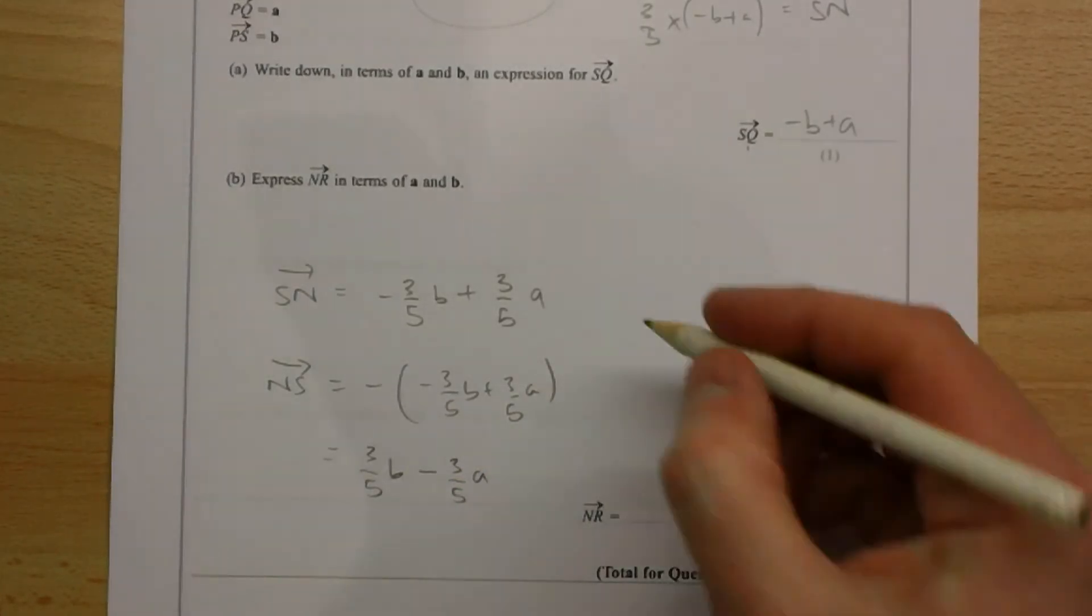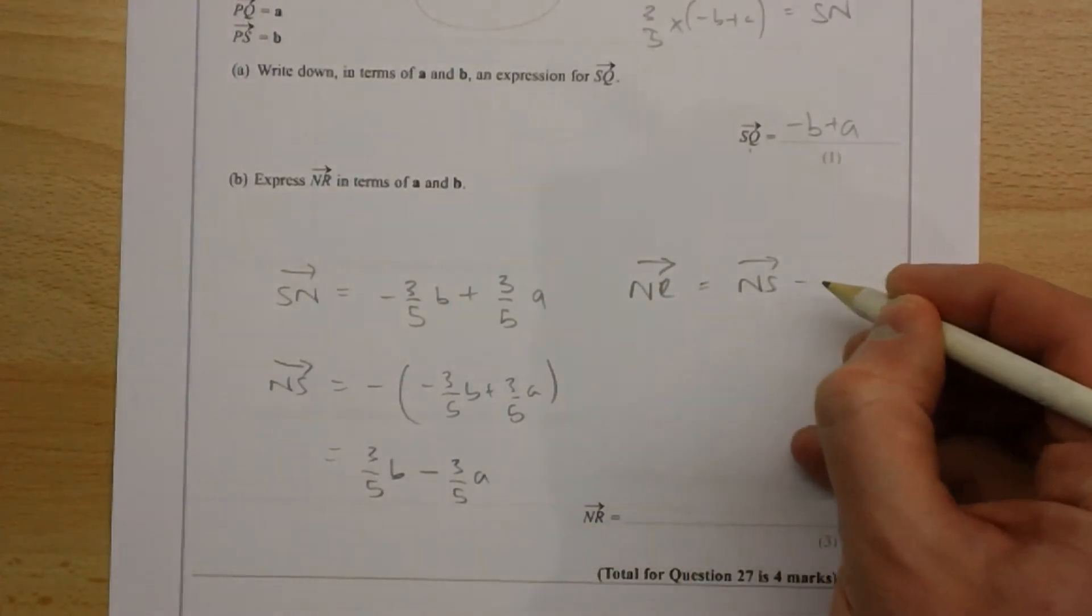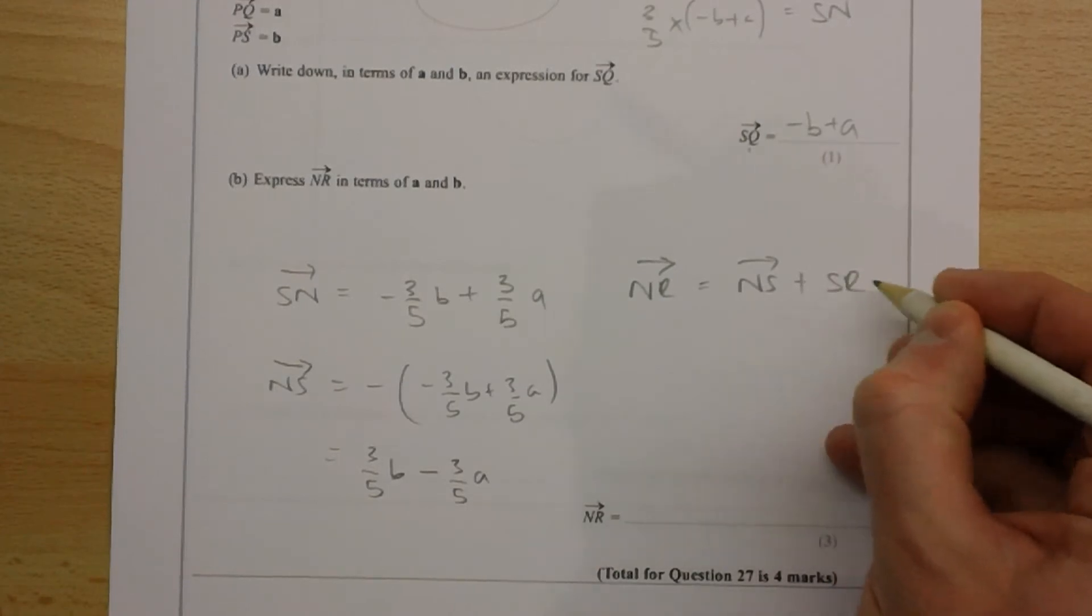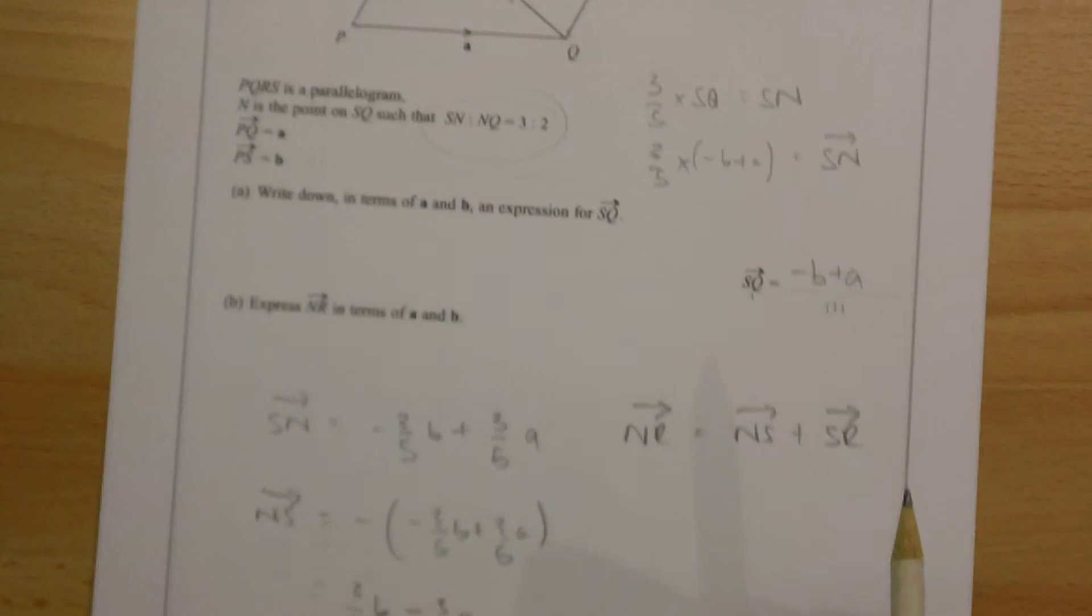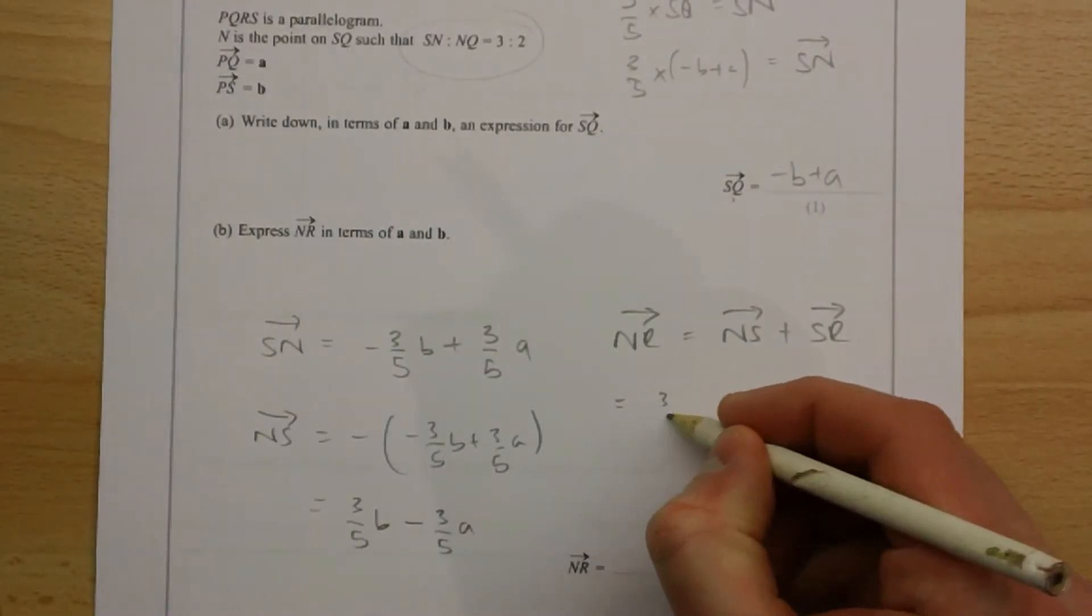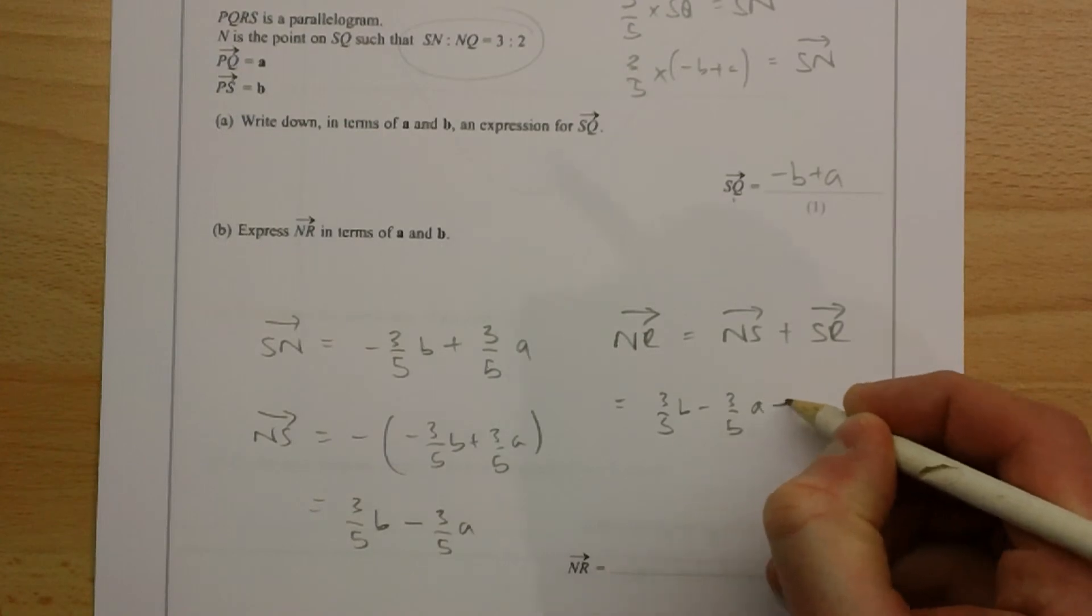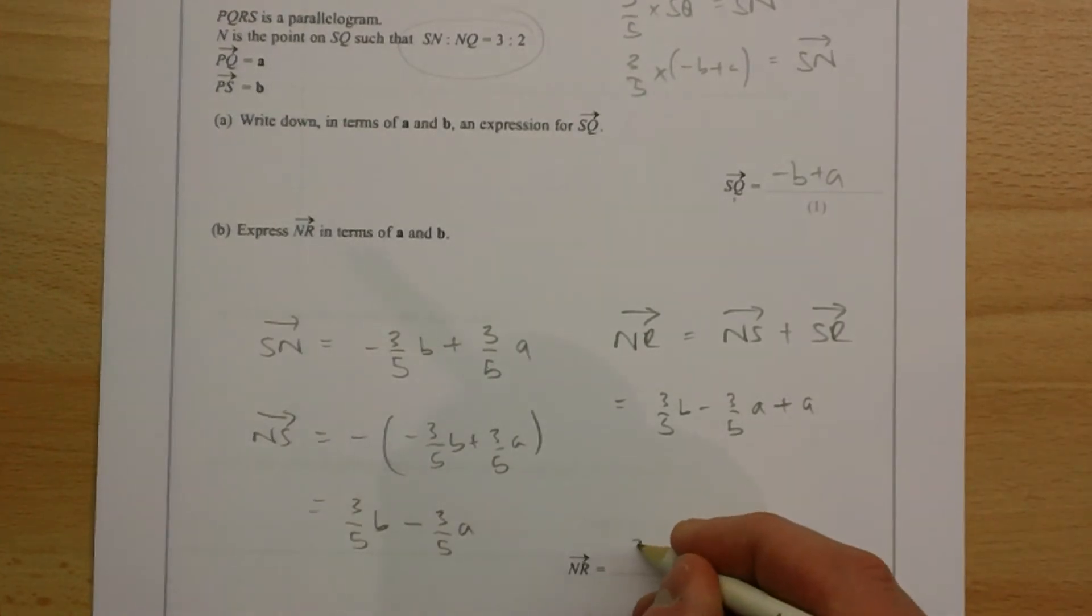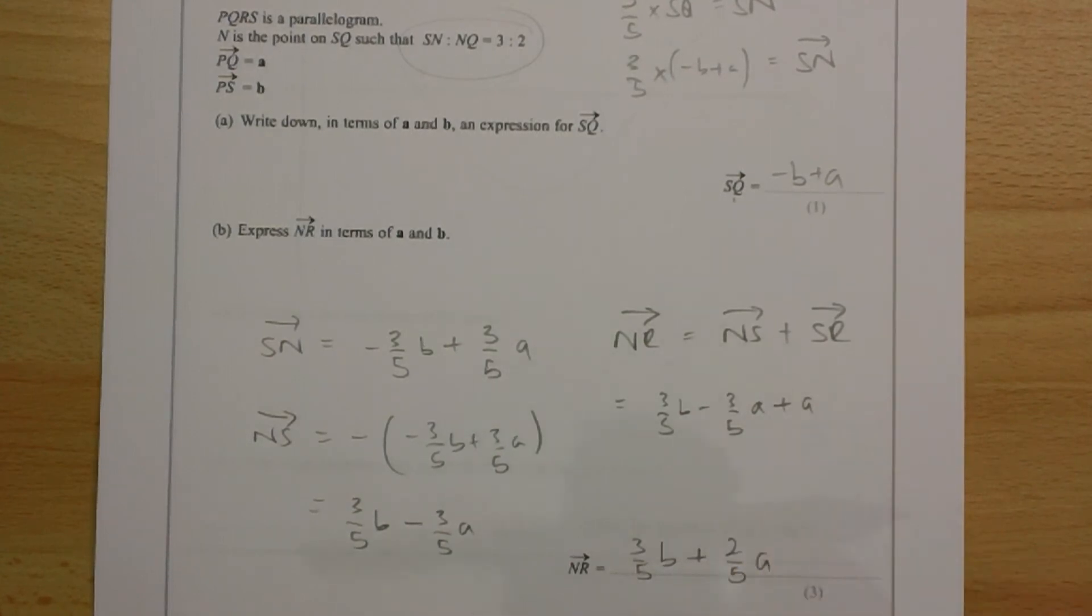And now to get NR, we need to add that vector to this vector here. So we've got three-fifths B minus three-fifths A plus A, which is three-fifths B plus two-fifths A.